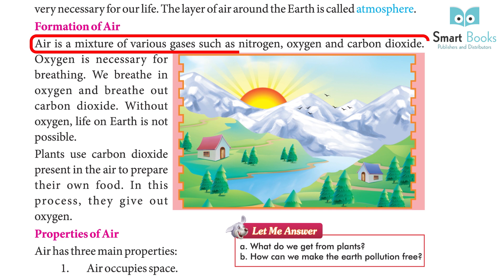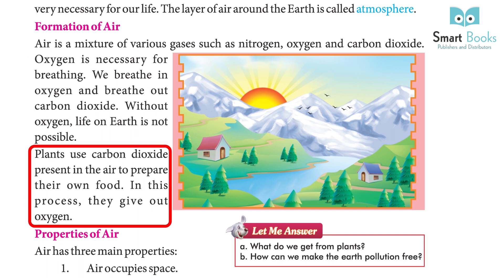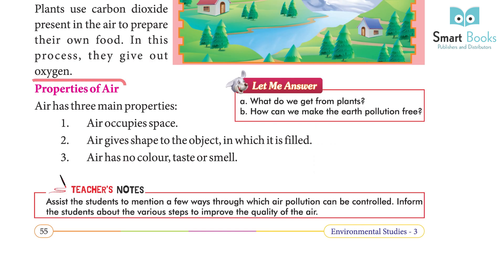Formation of air: Air is a mixture of various gases such as nitrogen, oxygen, and carbon dioxide. Oxygen is necessary for breathing — we breathe in oxygen and breathe out carbon dioxide. Without oxygen, life on Earth is not possible. Plants use the carbon dioxide present in the air to prepare their own food, and in this process they give out oxygen.